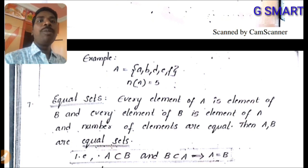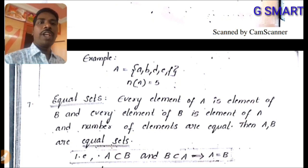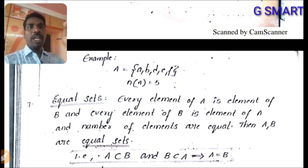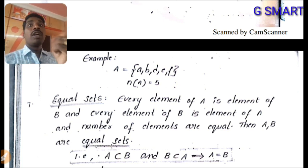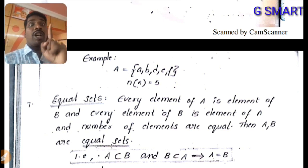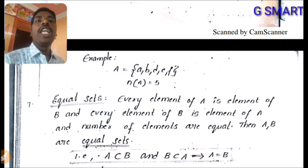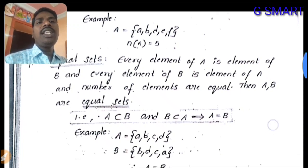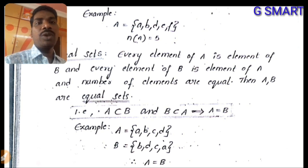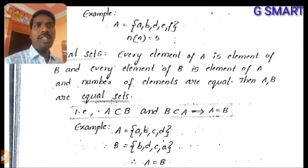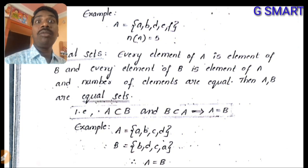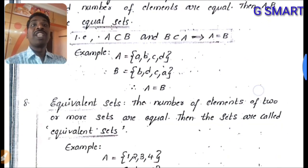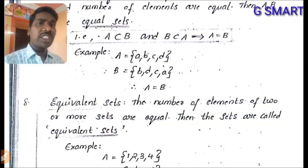Equal sets: if every element of A is an element of B, and every element of B is an element of A, then A and B are equal sets. This means A ⊆ B and B ⊆ A, so A = B. Example: A = {a, b, c, d} and B = {b, d, c, a} — the order is different but elements are the same, so they are equal sets.